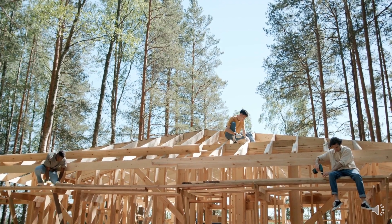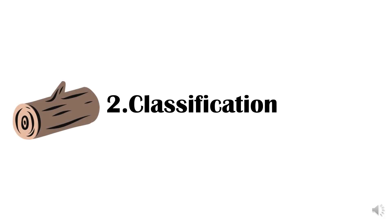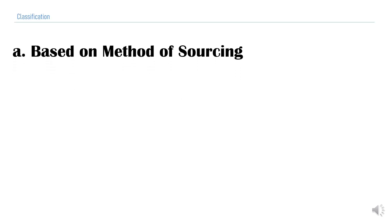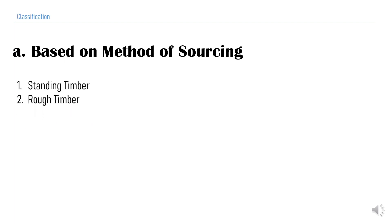Let's start the classification of timber as a building material. The first classification is based on the method of sourcing. This is a simple classification, which is classified as standing timber, rough timber, and converted timber.